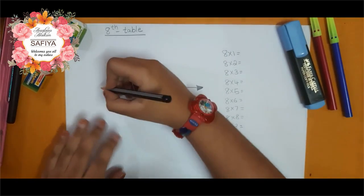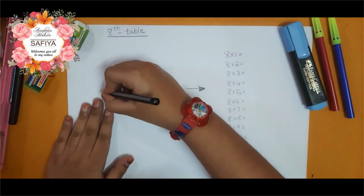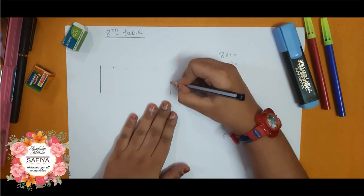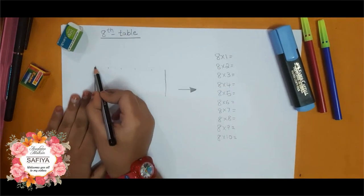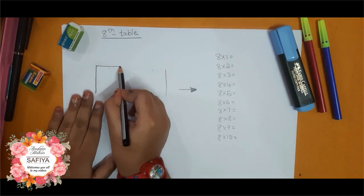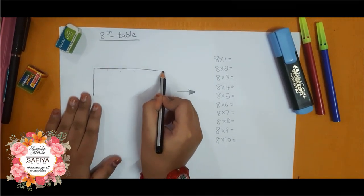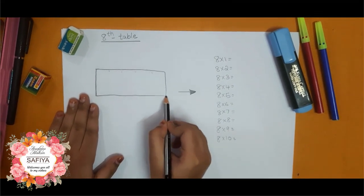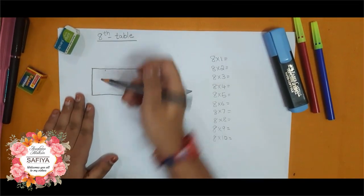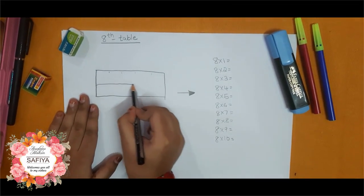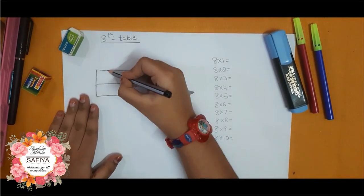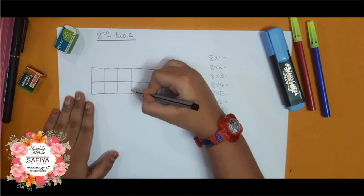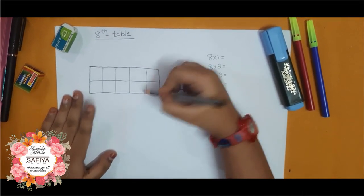Now let's start. First vertical line, once again vertical line. Horizontal line, once again horizontal line. One, two, three, four.